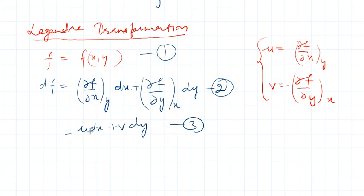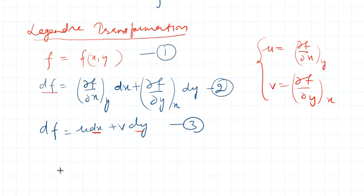Here u is basically ∂f/∂x at constant y, and v is equal to ∂f/∂y. So df is the differential in terms of x and y — that is, df is a function of x and y. We have to keep this in mind because it will help us later on.